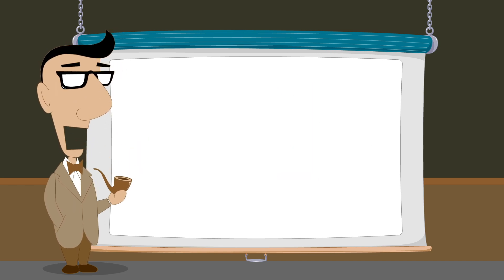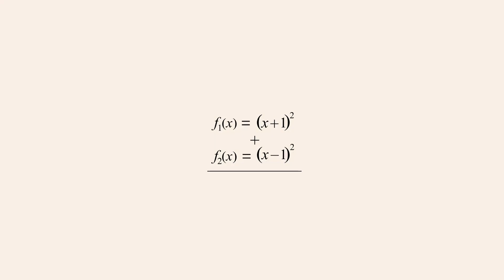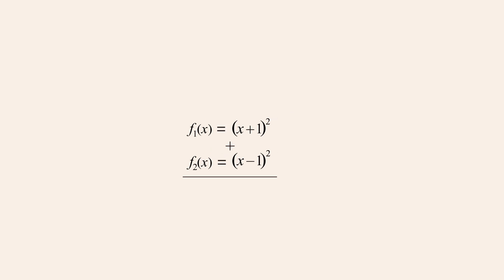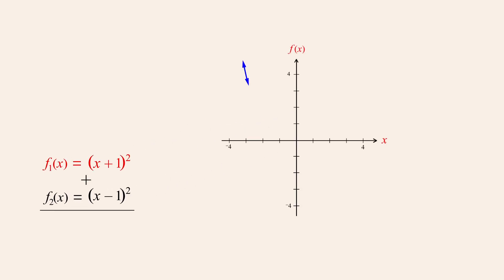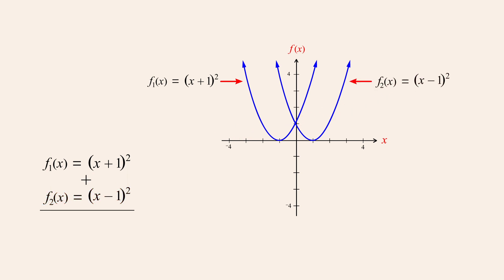As a second example, let's add the function (x plus one) quantity squared and (x minus one) quantity squared. The graphs of both of these functions are parabolas. Summing these two functions, we get (x plus one) quantity squared plus (x minus one) quantity squared. But what would this function's graph look like?